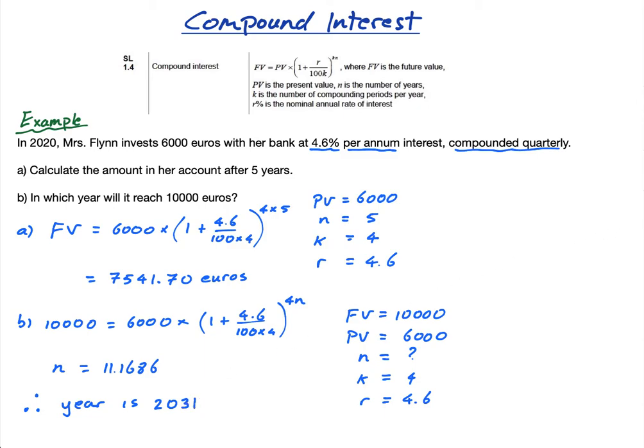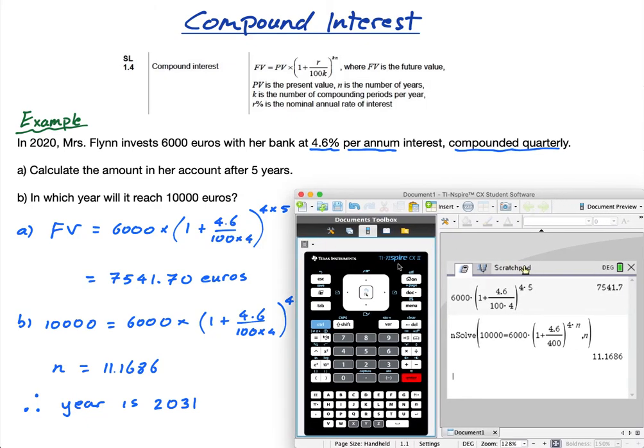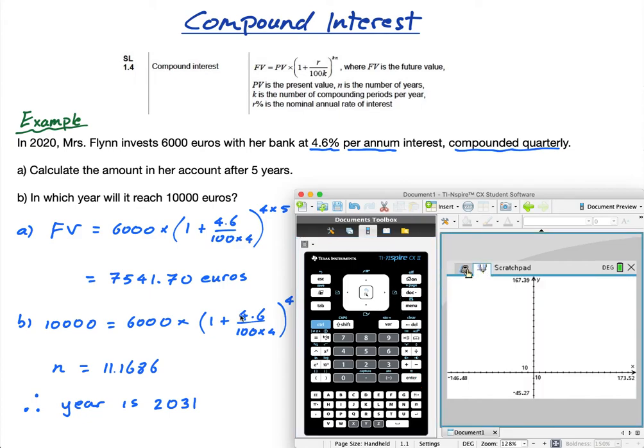I want to show you another way to visualize that. If I graph this—and I did this in the arithmetic sequence lesson as well—if I graph the function 6,000 times [1 plus (4.6 over 400)] to the power of 4x.